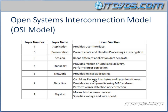Layer two is our data link layer. This combines packets into bytes and bytes into frames, provides access to media using MAC addresses, and also performs error detection — not correction; the correction actually happens at layer four. Layer one is the physical layer. This moves bits between devices and specifies voltage and wire speed, representing the actual physical media you're networking across, like an Ethernet cable.